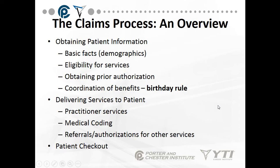The claims process begins by obtaining patient demographics and information, verifying eligibility for services, obtaining prior authorization, and coordinating benefits. This coordination involves the birthday rule — used when a household has more than one health insurance policy.